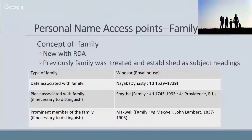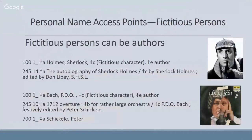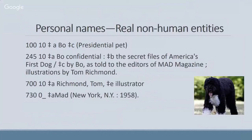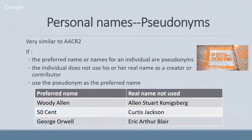Something new with RDA is the concept of family. Previously it was just treated and established as subject headings, but now you can have a royal house, a dynasty, or just a family as an access point. Another change: fictitious persons can be creators — so you can have Sherlock Holmes in a 100 field or other fictitious characters such as PDQ Bach. And real non-human entities can also be creators — such as a previous president's pet who told their story to someone and ended up getting an access point. The handling of pseudonyms is very similar to AACR2 — if they write under their pseudonym, that's what we use, because again we transcribe what we see.